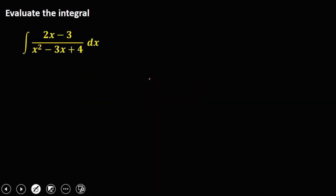So we have this given — evaluate the integral. In this case, u is equal to the denominator, that's x squared minus 3x plus 4. Then to solve for the derivative of u: derivative of x squared is 2x, derivative of negative 3x is negative 3, and for 4 it's 0. So du is 2x minus 3 dx. Since the numerator on the given is 2x minus 3 dx, we can now use u-substitution.